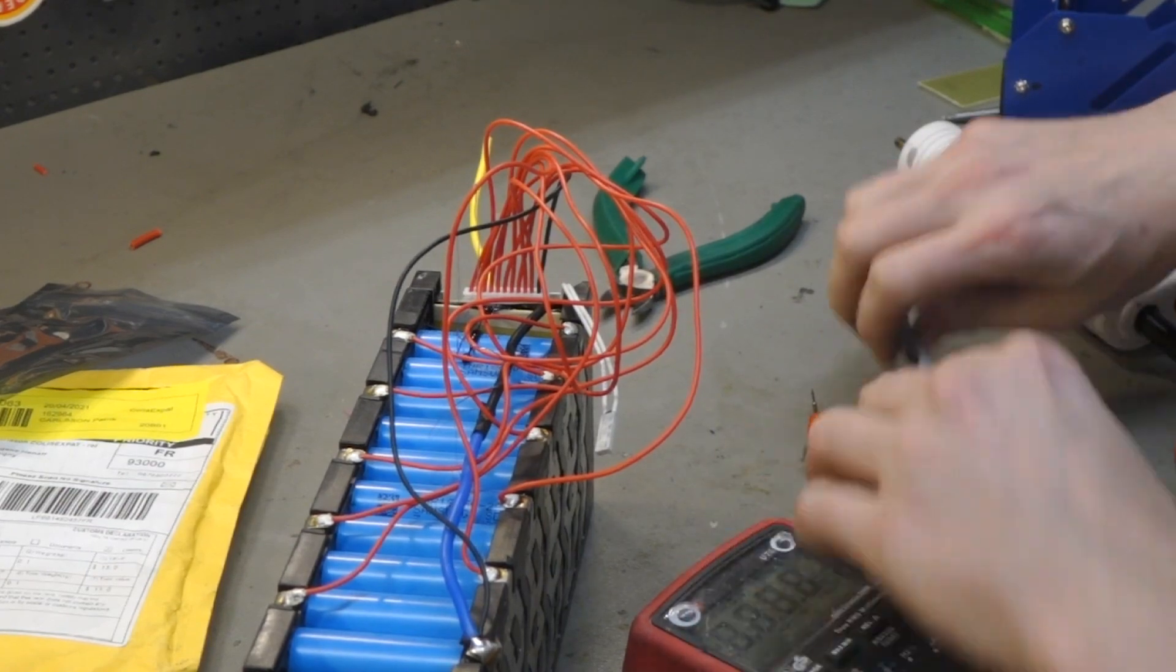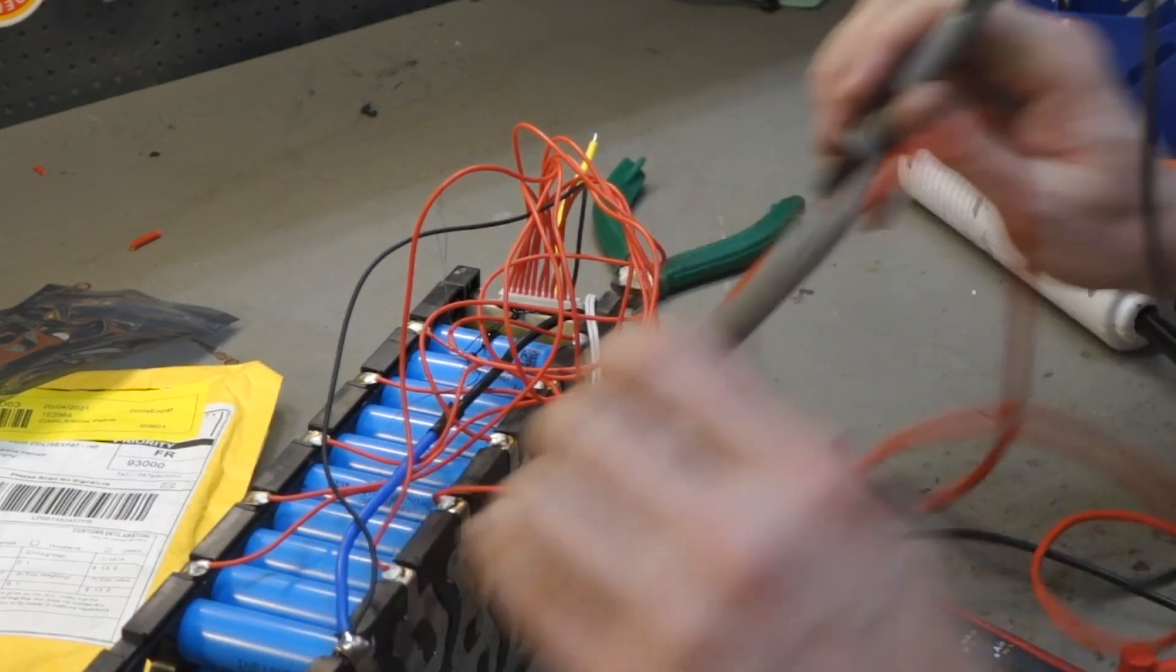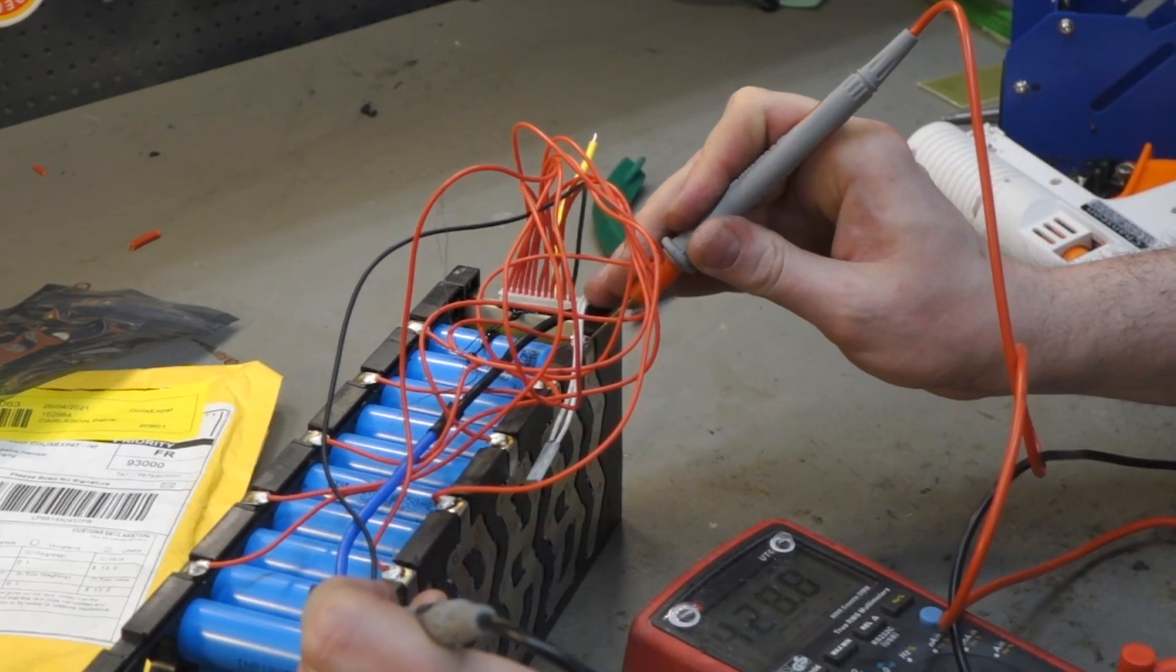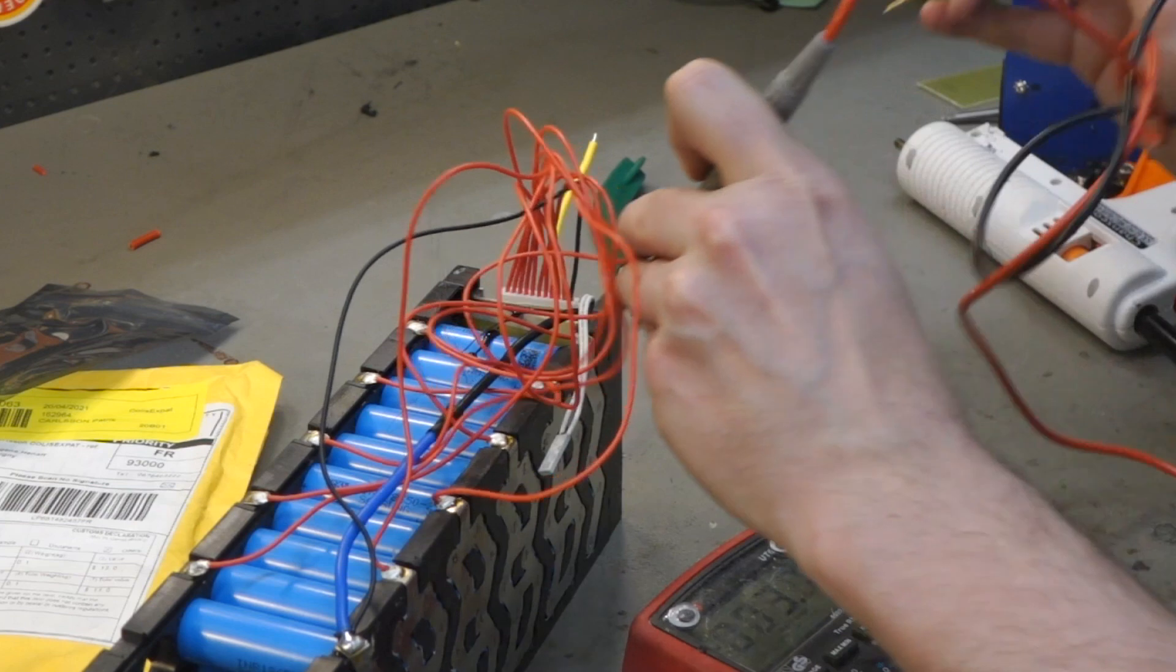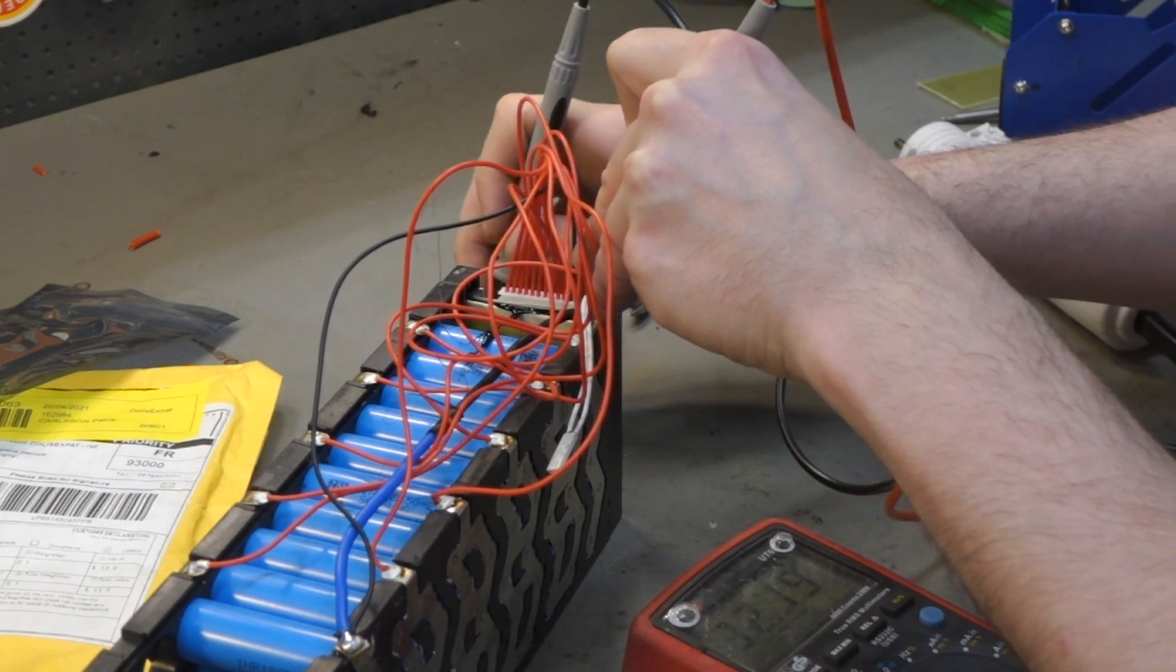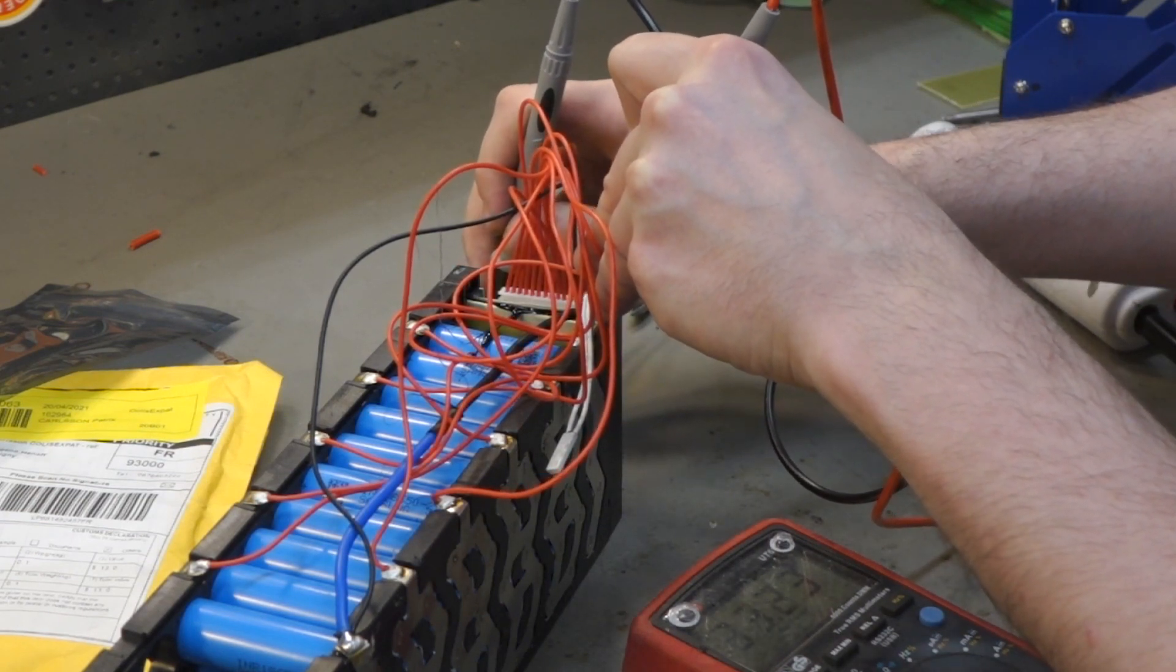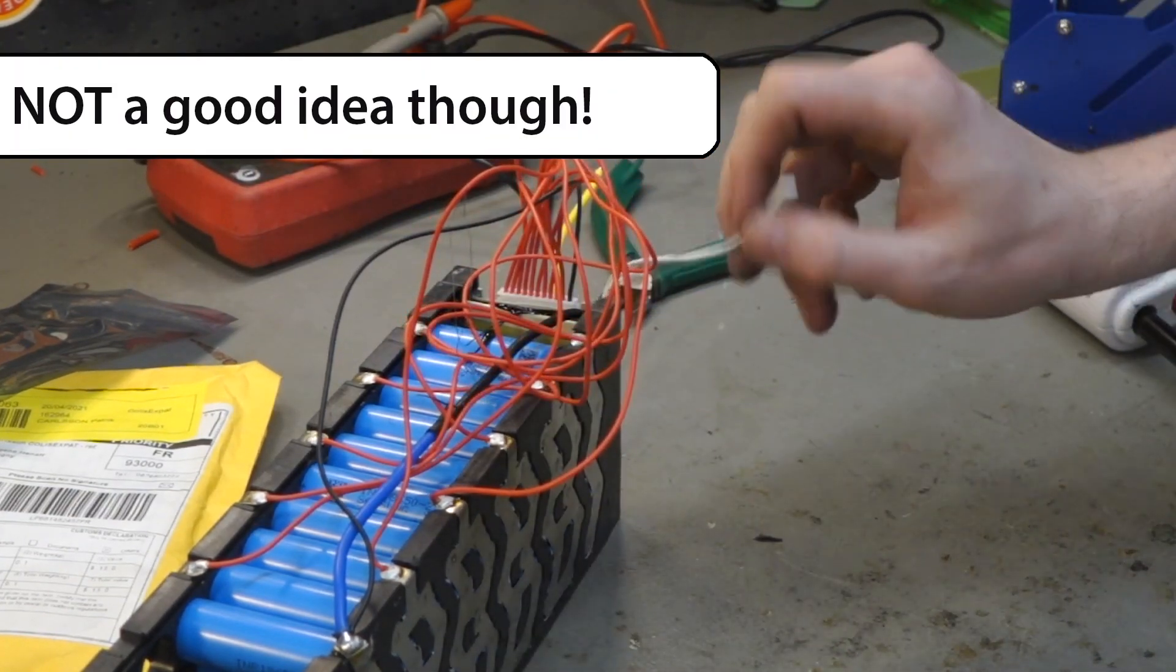Now, if you want to test the BMS, that you actually connected it right and it's working properly, first you check the voltage of the cells on the terminals: 3.3, 3.2, 3.3. Then you check the individual wires - they should be the same: 3.3, 3.2, 3.3. And this charging: 3.3, 3.2, 3.3.